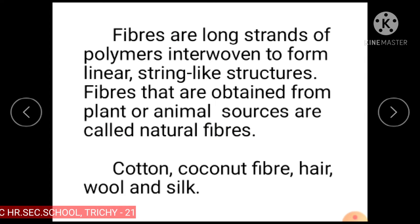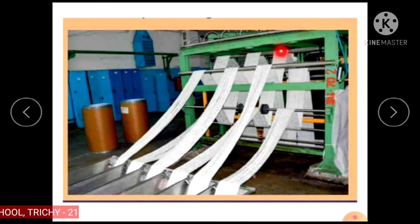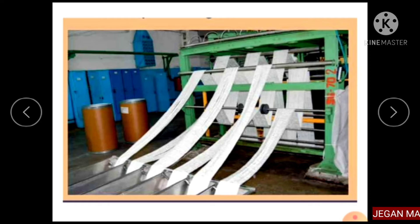Fibers are long strands of columnar structures interwoven to form linear string-like structures. Fibers that are obtained from plant and animal sources are called natural fibers. Examples include cotton, coconut fiber, hair, wool and silk.